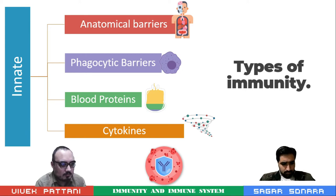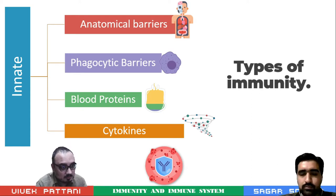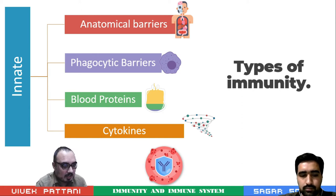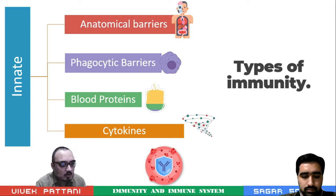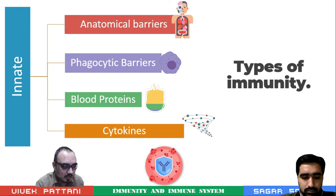Some of the barriers include phagocytic cells such as neutrophils, macrophages, NK cells, as well as physical barriers like skin and chemical barriers such as tears. Blood proteins include complement and other mediators of inflammation, and cell-derived factors such as cytokines.